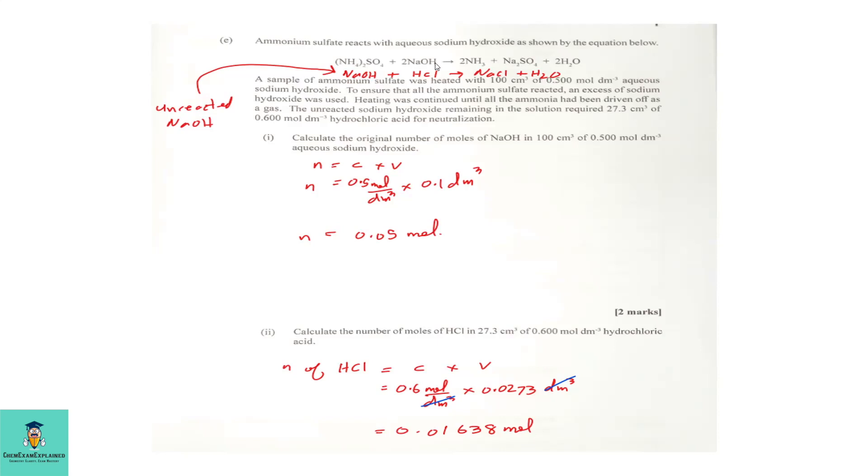And that is what we do to find the moles of hydrochloric acid. We are going to use that to find the moles of unreacted sodium hydroxide. And then we work our way back to find the number of moles of ammonium sulfate reacted with the sodium hydroxide. Let's continue.